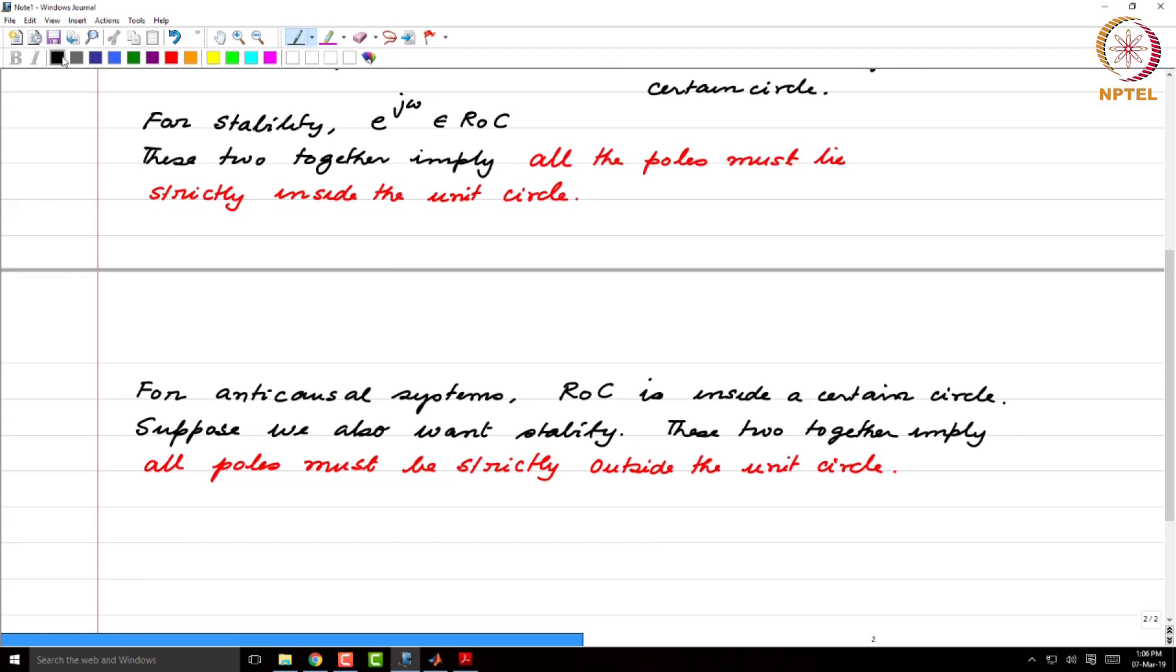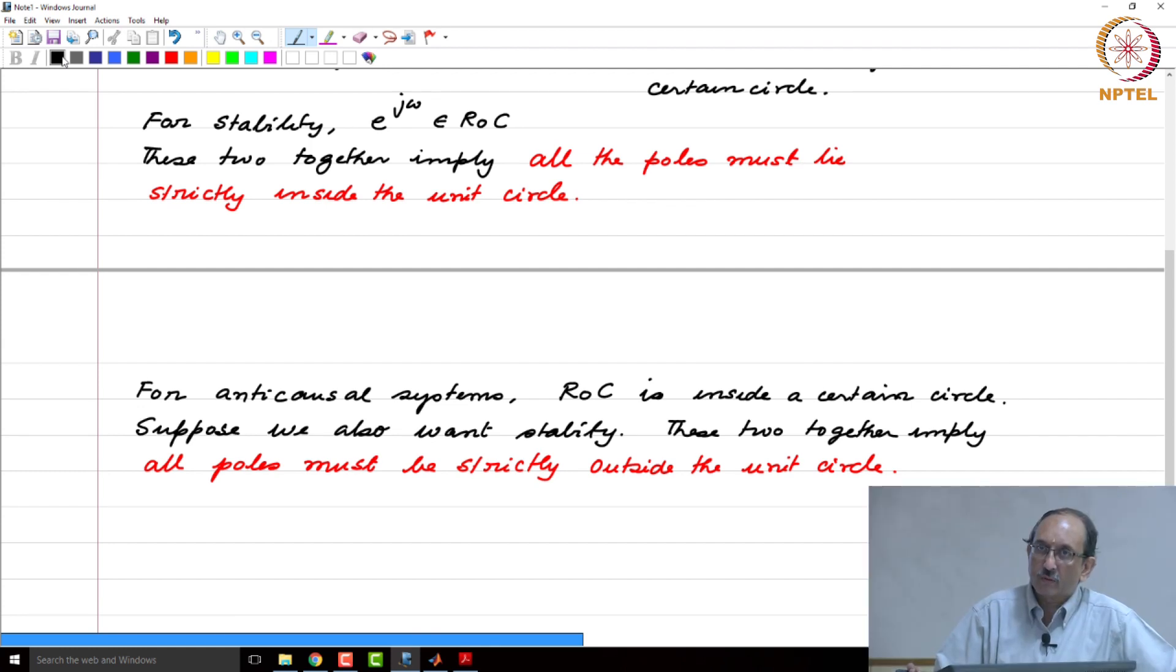Again, the counterpart for this is in the continuous time case, if the system is anti-causal in terms of its impulse response, then ROC is to the left of a certain vertical line and you want the j omega axis to be part of the region of convergence for stability. Putting these two facts together, you conclude that all poles must lie strictly in the right half plane.